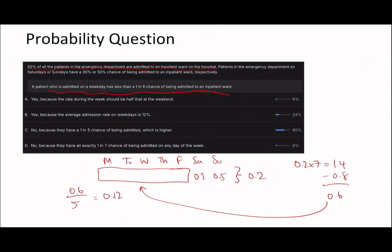So the average admission on a weekday is just going to be 0.6 divided by 5, which is 0.12. So the person who's admitted on a weekday has less than a 1/6 chance of being admitted. Once again, 1/6 is 0.1666, so I'd say this is true. And out of these possibilities, rate during the week should be half that of the weekend. It's not about being half that of the weekend, that's wrong. The average admission rate on weekdays is 12%. Yes, this is going to be the answer.